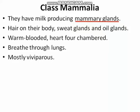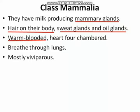Another feature of class Mammalia is that they have hair on their body, as well as sweat glands and oil glands on their skin. These are the most important characteristic features that distinguish class Mammalia from all other classes of phylum Chordata — mammary glands, hair, sweat glands, and oil glands. Like Aves, these are also warm-blooded organisms with a four-chambered heart.